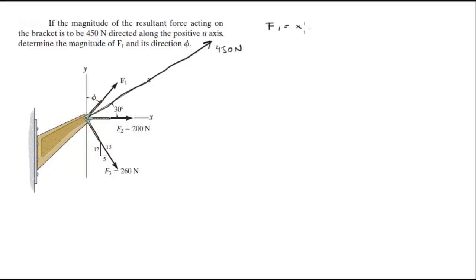F1 is equal to x in the i component, we don't know it, plus y in the j. F2 is equal to 200 in the positive y-direction and nothing in the i-direction. F3 is 260 times 5 over 13 in the i-direction minus 260 times 12 over 13 in the negative j-direction.